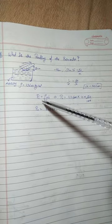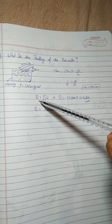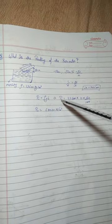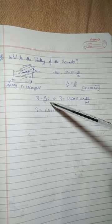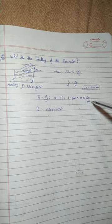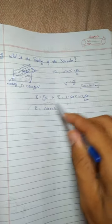Formula of reading of barometer: P equals rho g h, where we have all values. Put in this, P equals 13 into... then the value of reading of barometer is 68,000 Newton per meter square.